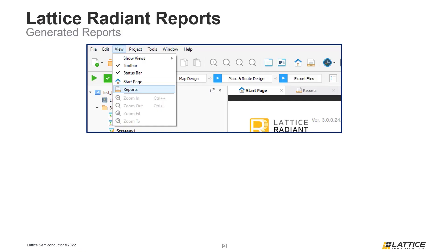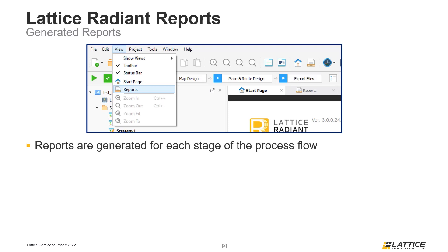As users develop their projects, Radiant will generate several different types of reports for different steps in the process design flow. These generated reports can be observed using Radiant's Reports View.